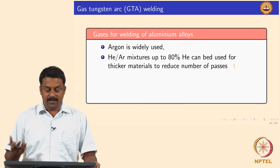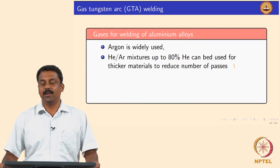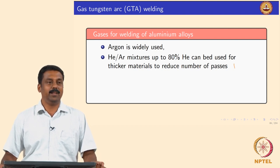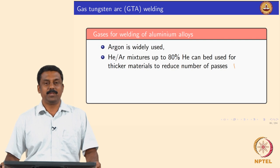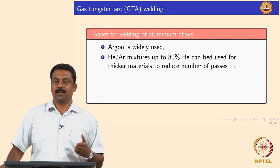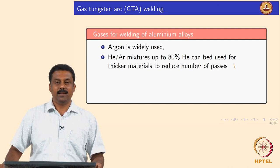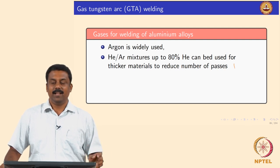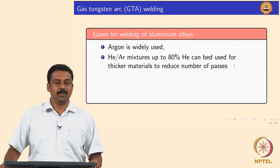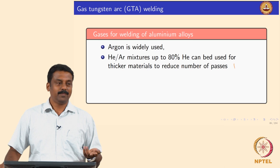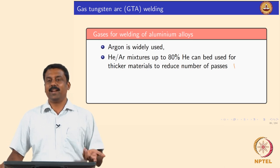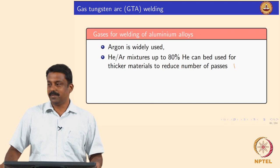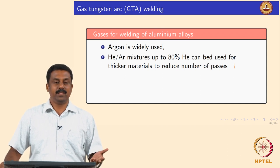For aluminium alloys, argon is widely used. Welding of aluminium is always tricky - aluminium alloys are a problem child in terms of weldability because of cracking, thermal conductivity, and distortion issues. Controlling the arc characteristics is the safe bet. Most of the cases we use simple argon and do not want to complicate the already complicated situation with additional mixtures. Argon is widely used, and helium mixtures up to 80% can sometimes be used to increase penetration for thicker sections.